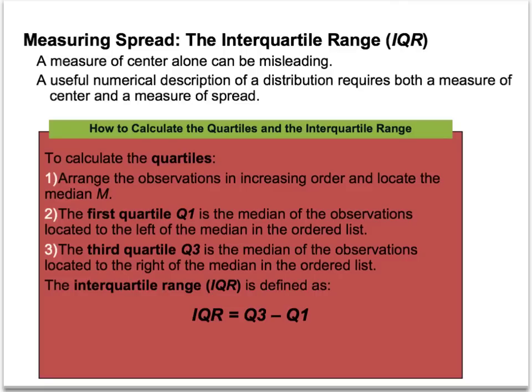Another way to measure spread is to look at what's called the IQR, or interquartile range. This basically involves finding the median, and then finding the median of both the first half and the second half of the data. You range the data in order from smallest to biggest, find the middle value — which is a specific value if there's an odd number of data points, or the average of the middle two if there's an even number. Then you find the first quartile Q1, the median of the first half (data to the left of the median), and the third quartile Q3, the median of the second half. The IQR is Q3 minus Q1. Keep in mind Q3 is always bigger than Q1 as long as the data is ordered from smallest to biggest.